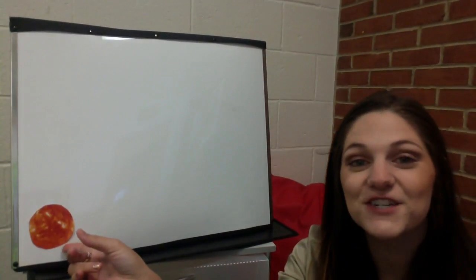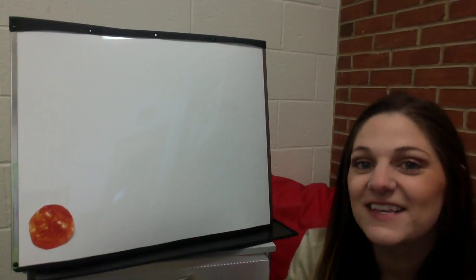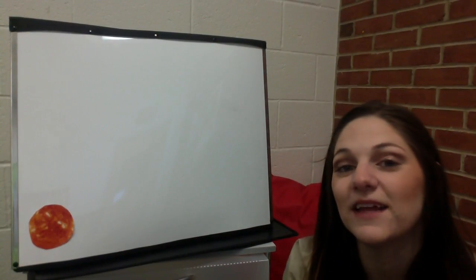This is a picture of the Sun. Today we're going to learn about the eight planets that orbit around our Sun in order that they are closest to the Sun.